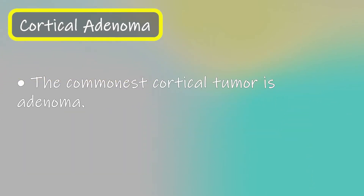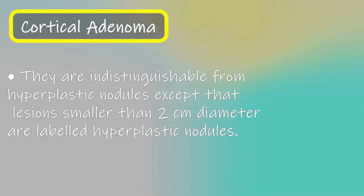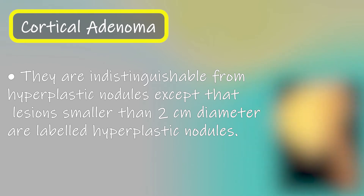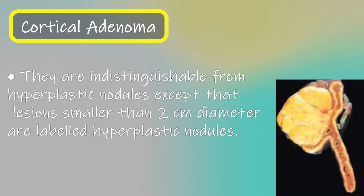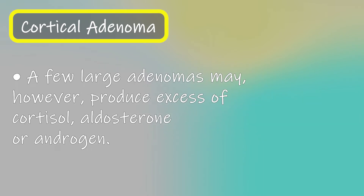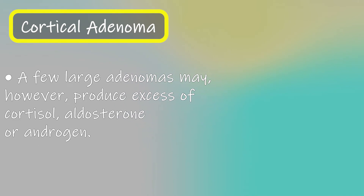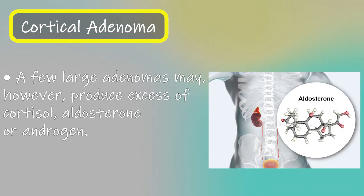The commonest cortical tumor is adenoma. They are indistinguishable from hyperplastic nodules, except that lesions smaller than 2 cm diameter are labeled hyperplastic nodules. A cortical adenoma is a benign and slow-growing tumor. It is usually small and non-functional. A few large adenomas may, however, produce excessive cortisol, aldosterone, or androgen.